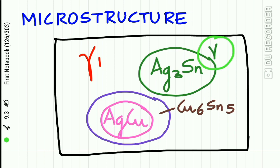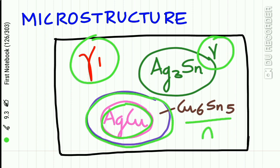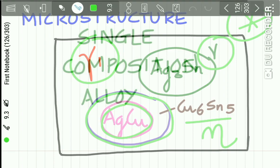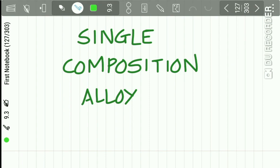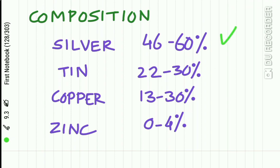The microstructure of the admixed alloy contains unreacted alloy particles and a matrix of the gamma 1 phase and the silver-copper particles, which are surrounded by the eta phase. The single composition alloys have a composition of silver 46–60%, tin 22–30%, copper 13–30%, and zinc 0–4%.